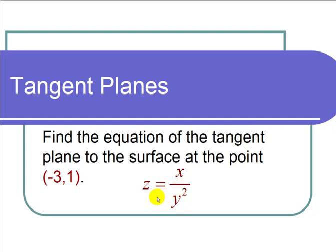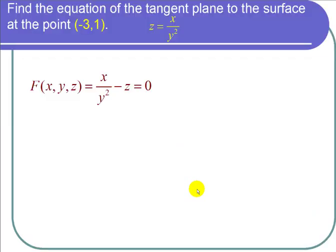I'm going to start by subtracting z from both sides to set this equal to zero and call the function capital F. So I get capital F of xyz equals x over y squared minus z equals zero.